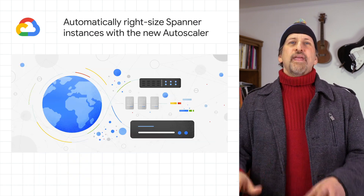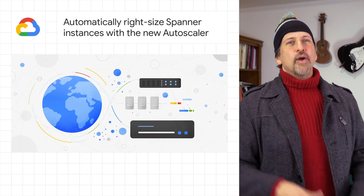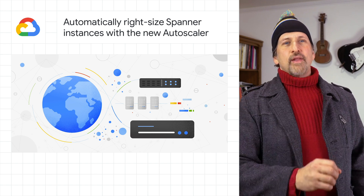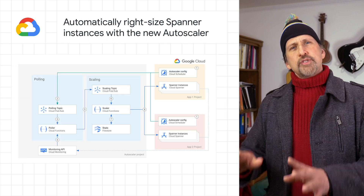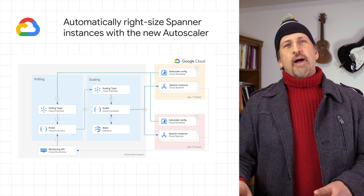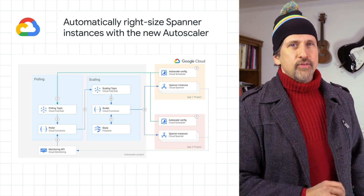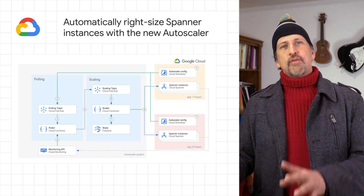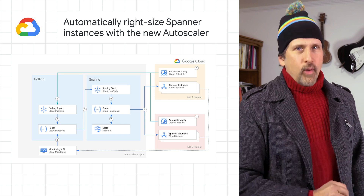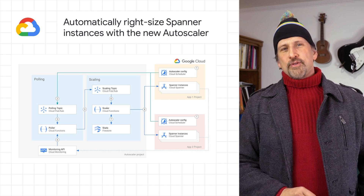To make it even easier to build with Cloud Spanner, we're announcing the release of Autoscaler, an open source tool for Spanner that watches key utilization metrics from the Cloud Monitoring API and adds or removes nodes as needed based upon those metrics. More info on deployment options and how to get started are on the post.